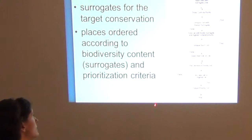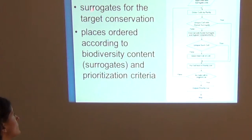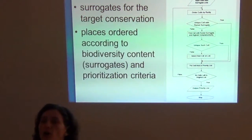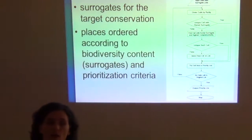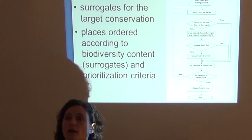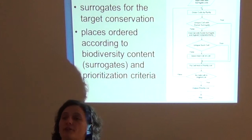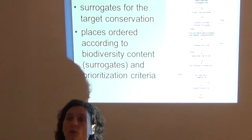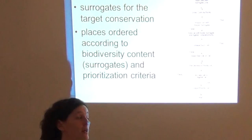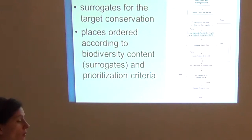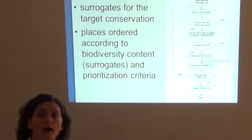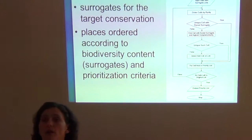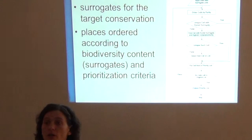What ResNet does is it uses surrogates for the target conservation. By surrogates we can think of number of species, for example — so the target conservation is biodiversity conservation, and the surrogates would be the number of species. Places or sites on the landscape are ordered or ranked according to that biodiversity content, or simply put, number of species.